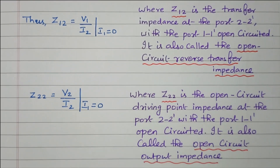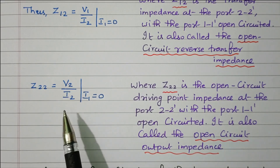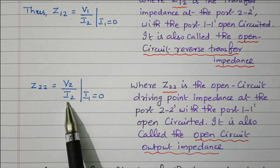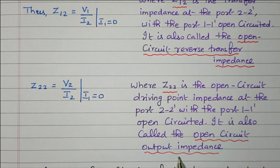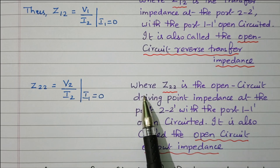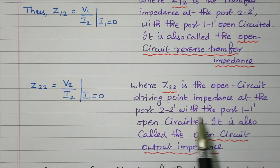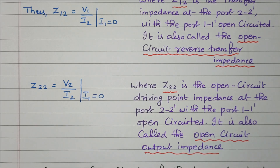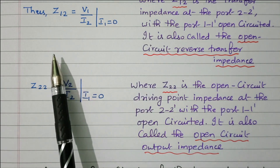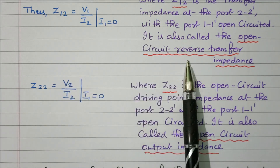Another parameter is Z22, which equals V2 divided by I2, with I1 equal to zero. Both voltage and current are at the output port, so this is the open circuit output impedance. Z22 is the open circuit driving point impedance at port 2-2' with port 1-1' open-circuited. It is also called the open circuit output impedance.